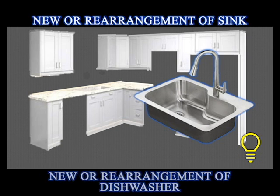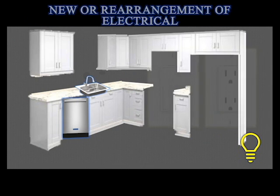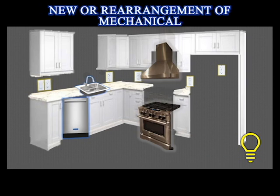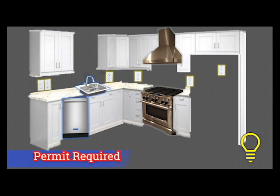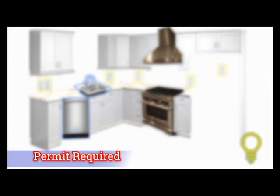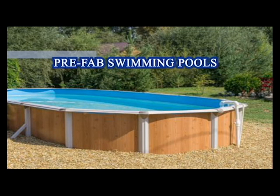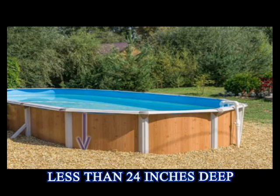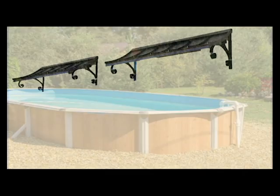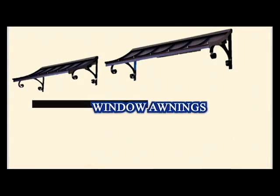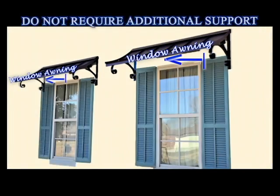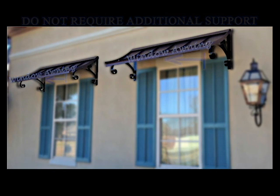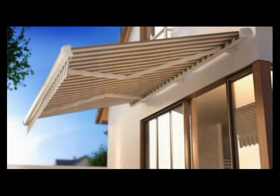New or rearrangement of a sink or dishwasher, new or rearrangement of electrical, or new or rearrangement of mechanical — any of those examples will require a permit. Prefabricated swimming pools are exempt from building permits, providing they are less than 24 inches deep. Window awnings less than 54 inches from the exterior wall that do not require additional support are exempt from a building permit; however, please check with the local planning department for restrictions.